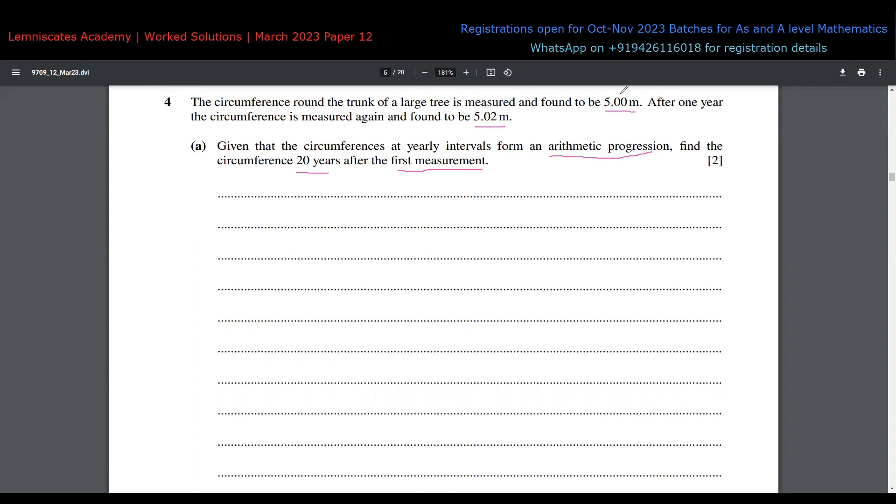So basically, if you're going to consider this as your first term, you're asking what's the value of the 21st term. If you're considering this as the first term, because we're considering something after the first year, then n becomes 20. Either way, depending on what you want to choose, you can go ahead.